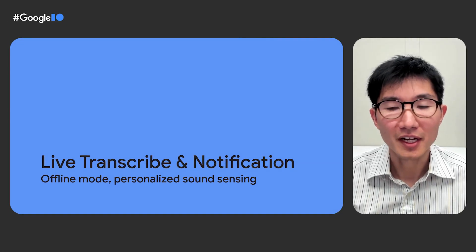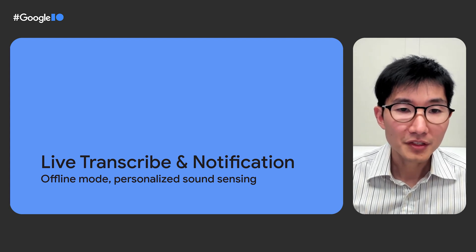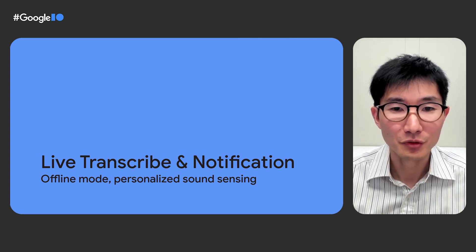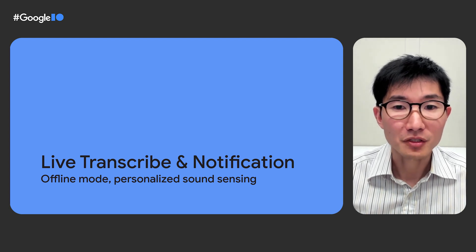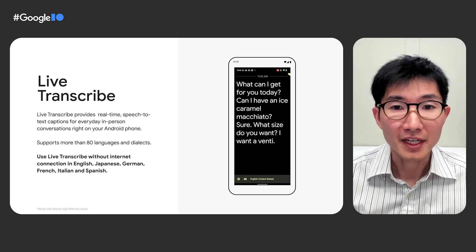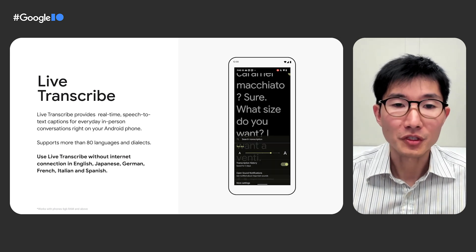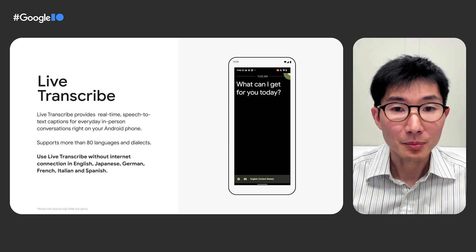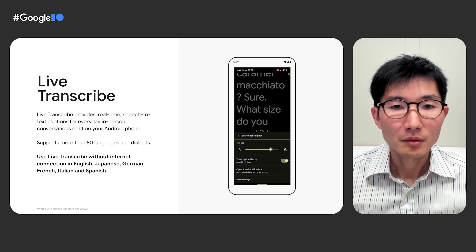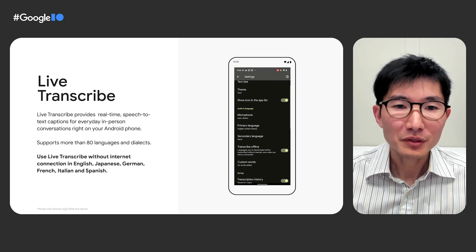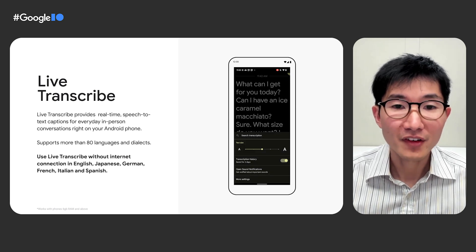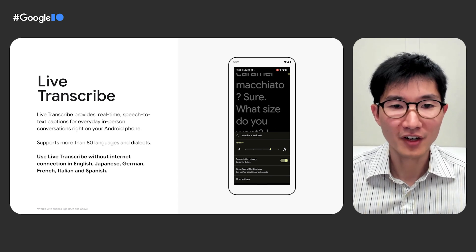Next, I'd like to talk about services that help people with hearing disabilities. First is Live Transcribe and Sound Notification — a service that provides real-time speech-to-text transcription as well as notifications about surrounding sounds. Live Transcribe does speech-to-text in real time, so text appears on your phone as words are spoken. This service already supports more than 80 languages and dialects, and you can quickly switch between two languages. What's new is the offline mode, meaning real-time transcriptions that work even when you're not connected to Wi-Fi or a mobile network. This is now available in English, Japanese, German, French, Italian, and Spanish.